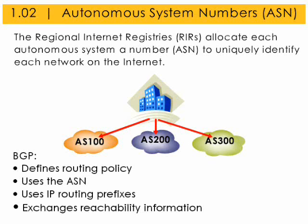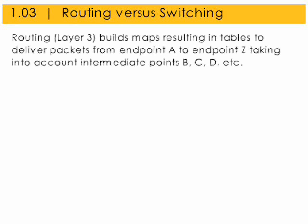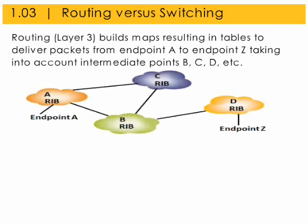BGP defines routing policy, uses the ASN, uses IP routing prefixes, and exchanges reachability information. Routing is a Layer 3 protocol that builds maps resulting in tables to deliver packets from endpoint A to endpoint Z, taking into account intermediate points B, C, D, etc. The router finds active paths via routing protocols for new packets, taking into account the transit and endpoint hops.